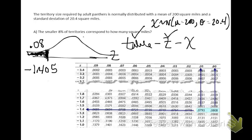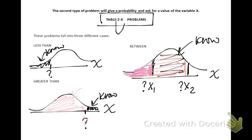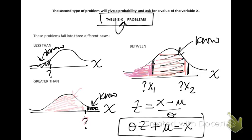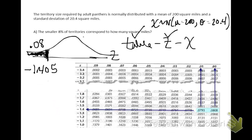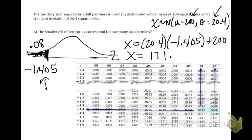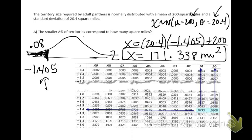To convert from z to x, solve for x in the z-score formula: multiply by sigma and add mu, giving x = sigma·z + mu. Plugging in: x = 20.4 × (−1.405) + 200 = 171.338 square miles. So 8% of the territories will be smaller than about 172 square miles.